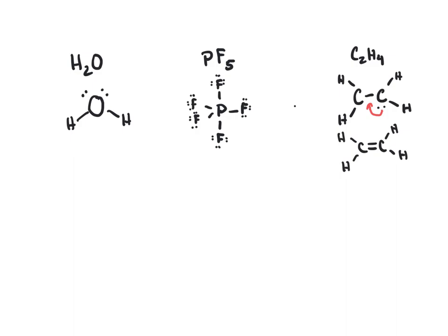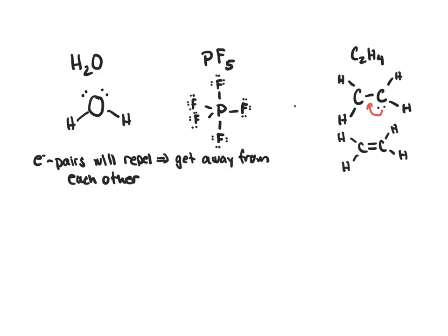The next step in predicting the shape of a molecule is to consider where those electrons are in the molecule. The principle we use is that electron pairs try to get as far away from each other as possible, because they're all negatively charged. So if we think about how we could arrange four pairs of electrons — remember that a bond is a pair of electrons — and get them as far away from each other as possible, we would want the largest angle between each of those four pairs. It turns out the best way to do that is to put these electron pairs in the form of a tetrahedron.